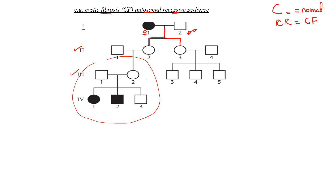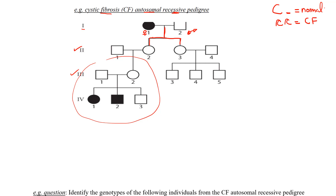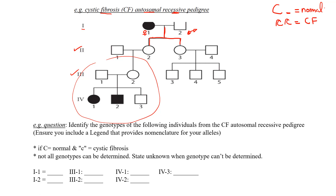Another thing they'll ask you is to identify genotypes, but you can only do that once you have a legend, and you can only build a legend once you know the mode of inheritance. If you don't know whether it's sex-linked or autosomal, you won't know whether to use X's and Y's or letters, or which should be capital or lowercase. In another video I'll give a summary flow chart of all the evidence to help you determine mode of inheritance quickly.